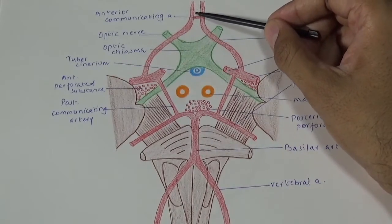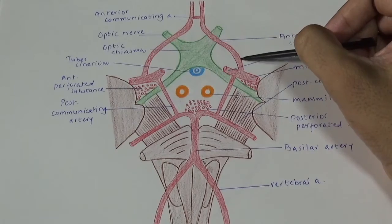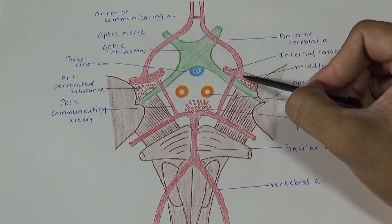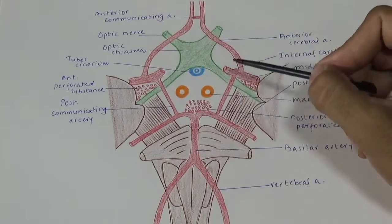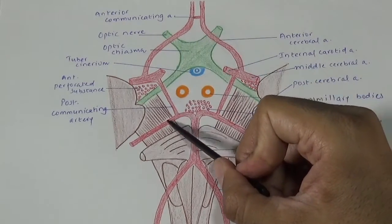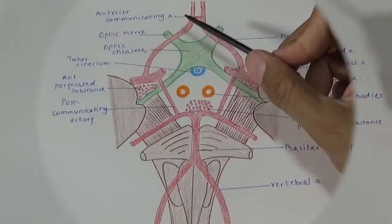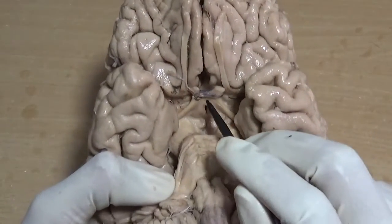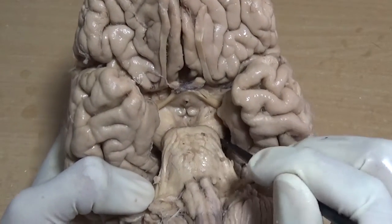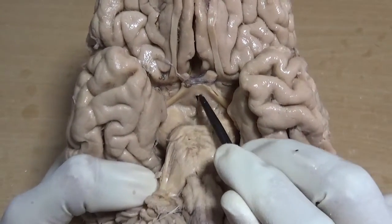To repeat: the circle of Willis is formed anteriorly by the anterior communicating artery, anterolaterally by the two anterior cerebral arteries, laterally by the two internal carotid arteries, posterolaterally by the two posterior communicating arteries, and posteriorly by the commencement of the posterior cerebral arteries from the basilar artery. This is the circle of Willis around the interpeduncular fossa. The structures of the fossa are: optic chiasma, optic tract, basis pedunculi, upper border of the pons, tuber cinereum, infundibulum, and mammillary bodies.